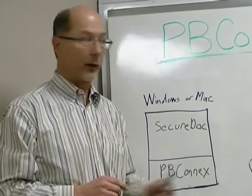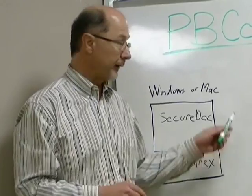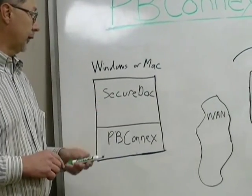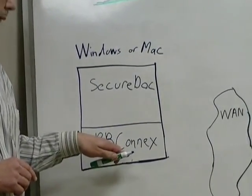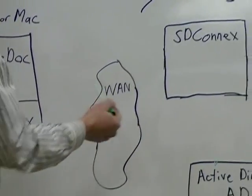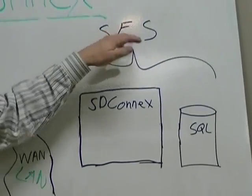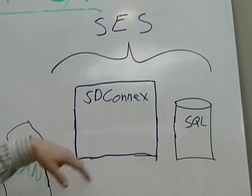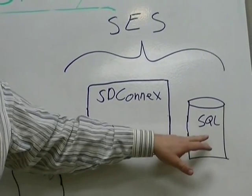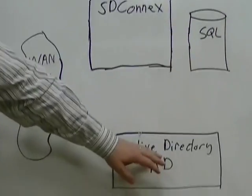I'm going to illustrate a use case for PB Connects in a second, but first I'll explain my diagram. On the left here, we have a Windows or Mac computer running SecureDoc with Preboot authentication and PB Connects enabled. A WAN or LAN in the middle. And on the server side: the SecureDoc encryption server, where some of our main components are shown — SD Connects, the communications front end, SQL database where the keys and users' computers are kept, and Active Directory.